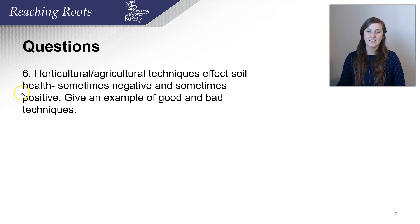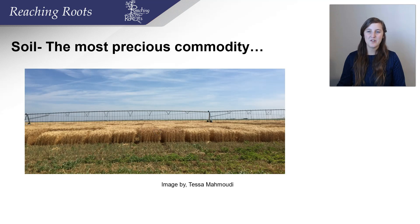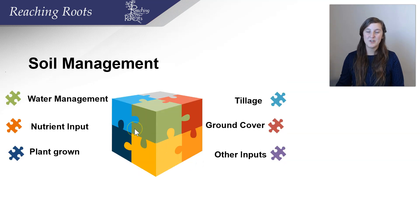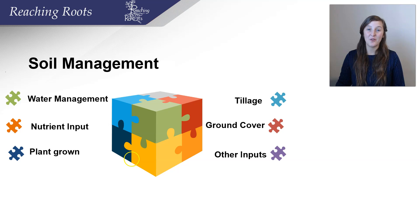Now it's time to answer question 6. Horticulture and agriculture techniques affect soil health, sometimes negatively and sometimes positively — give an example of a good and bad technique. Soil is a very precious commodity. If we don't take care of our soil, we cannot continue to grow food to feed our children and our children's children. Soil management is a puzzle that includes many components such as water management, nutrient input, plant growth, tillage, ground cover, and other inputs. Watch the next video after answering these six questions to dive deeper into soil science.